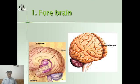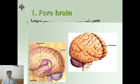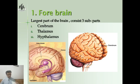The brain is divided into three parts: forebrain, midbrain, and hindbrain. Forebrain is the largest part of the brain and consists of three parts: cerebrum, thalamus, and hypothalamus. Cerebrum is the largest part of the brain — you can see it in this diagram. There are two hemispheres: the right cerebrum hemisphere and the left cerebrum hemisphere, and they are connected to each other through a structure called the corpus callosum.